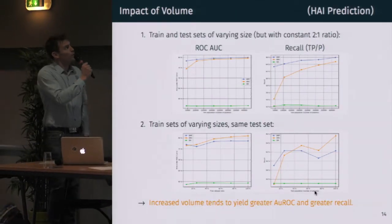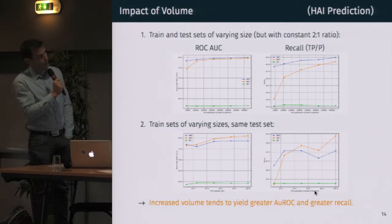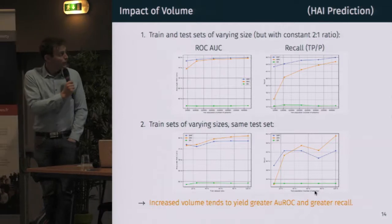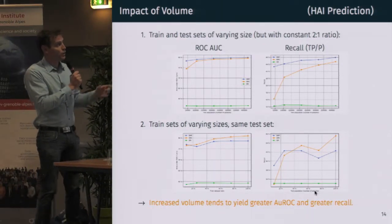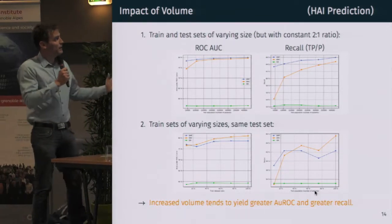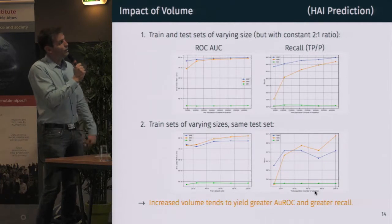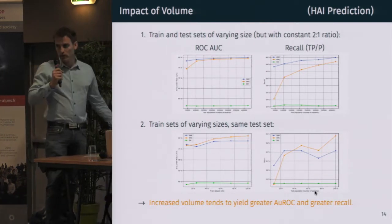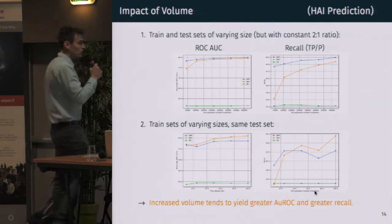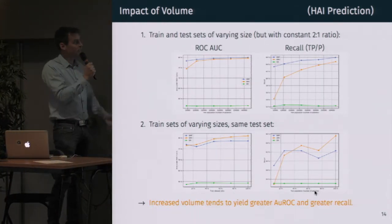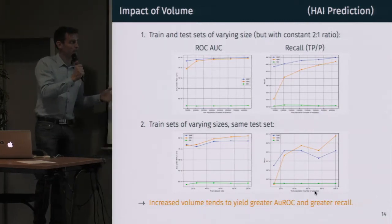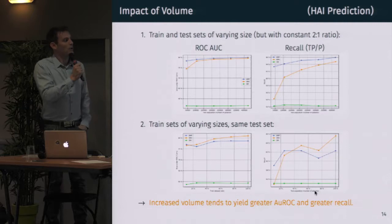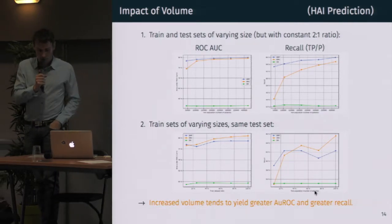Now we can look at the impact of volume, also for predicting HAI — hospital-acquired infections. We made several experiments. First, we kept a constant ratio between the train set and the test set and increased both in size. All metrics tend to show that the more volume, the more accuracy you get in making predictions. We can also consider a fixed test set and increase the size of the training set successively, and we observe that increased volume tends to yield greater area under the ROC curve and greater recall as well.